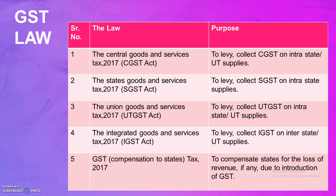Fourth is the Integrated Goods and Service Tax. This tax basically levies on interstate and union territory supplies. The last one is the Compensation Act — GST Compensation to States Act 2017. The main purpose of this act is to compensate states for the loss of revenue, if any, due to the introduction of GST. These five acts together constitute the GST law and play a vital role in GST calculation for Central, State, and Union Territories.